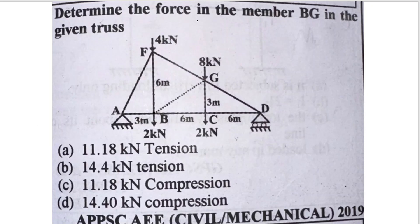Now here is a numerical example. We will find the force in member BG. When you are given this numerical, I will tell you which members to cut. For member BG, you make a small cut — you pass a section through the truss. If this section is made, we see that all the members pass from one joint and even 4 members are cut, so you have to try another section.